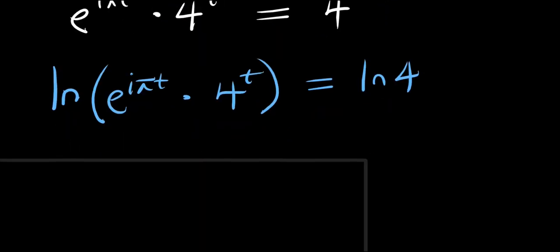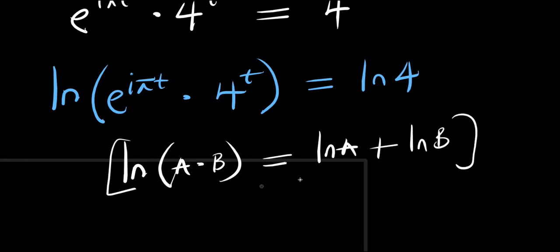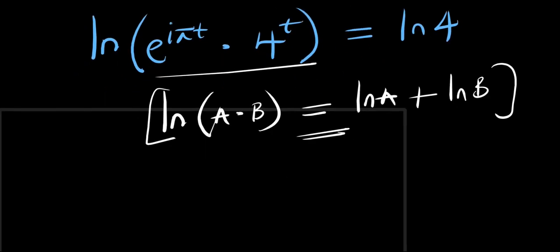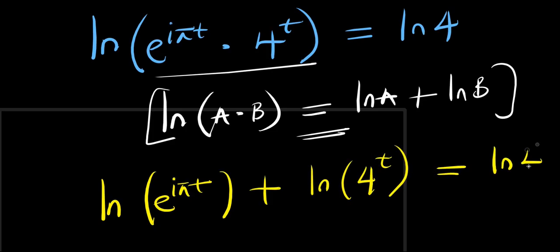Just like with regular logarithm, natural log of a times b equals natural log of a plus natural log of b. Applying this property, I'm going to have natural log of e to the power of (i·pi·t) plus natural log of 4 to the power of t, and this equals natural log of 4.